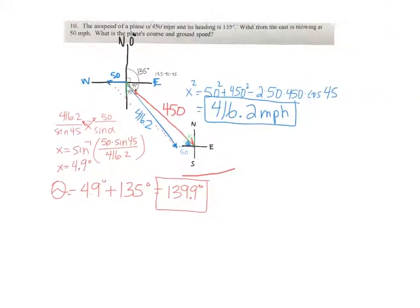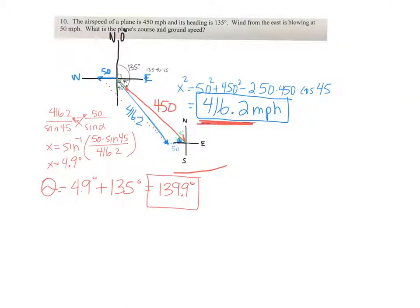Okay so I believe that's everything we wanted to do. We found the ground speed and we found the course or the direction in which the plane is flying. Using the law of cosines and the law of sines.